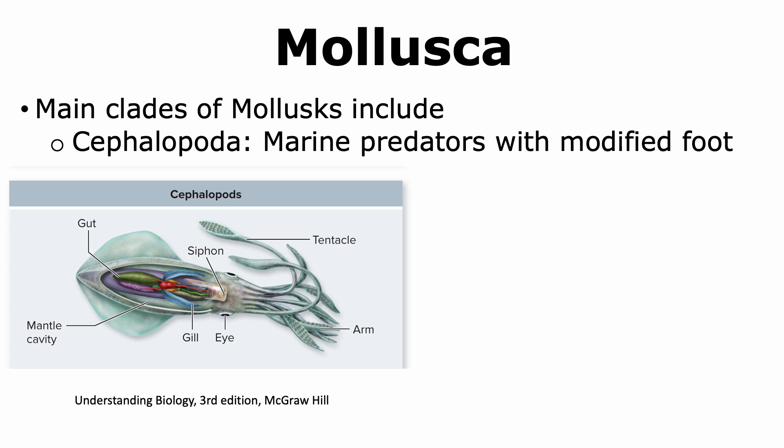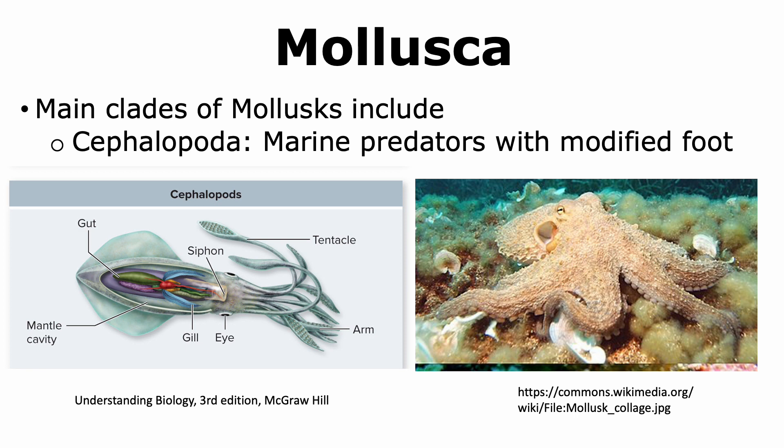Cephalopoda is a clade of Mollusca that includes marine predators with a modified foot. The foot has been modified to form a siphon that allows movement, as well as tentacles used to capture prey. Examples include octopus, squid, nautilus, and cuttlefish. Some cephalopods still have a shell while many others have lost it. Cephalopods have much more complex nervous systems as well as more advanced circulatory systems.